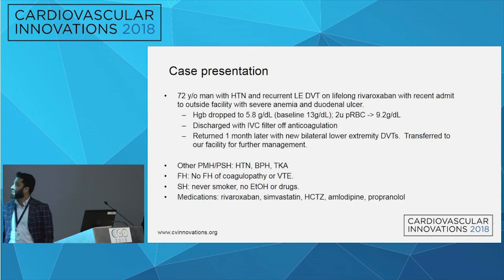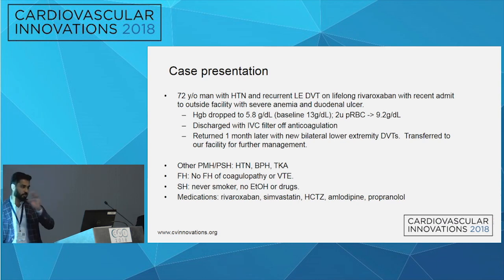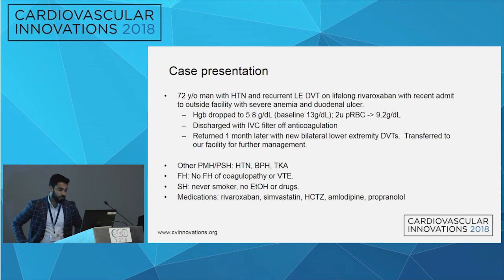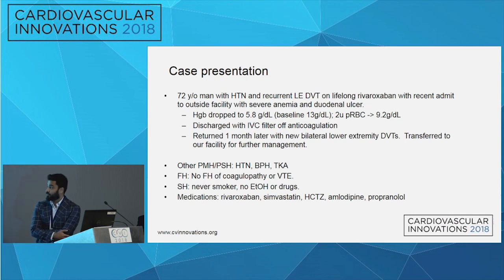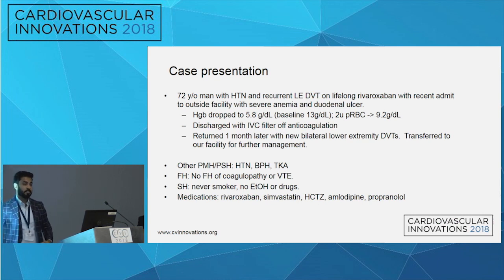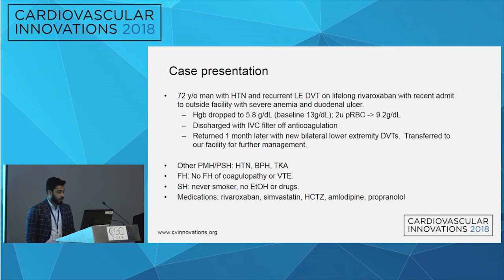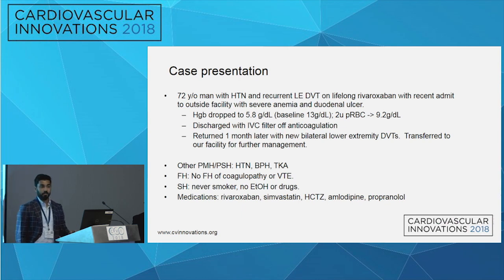This is a 72-year-old man who comes in with hypertension and a history of recurrent lower extremity DVTs. He was on lifelong rivaroxaban, with a recent admission to an outside hospital with severe anemia and a duodenal ulcer. His hemoglobin at that time was 5.8, with a baseline of 13. He received blood transfusions, was given an IVC filter, and discharged off anticoagulation. He came back a month later with new bilateral lower extremity DVTs and was transferred to us for further management.